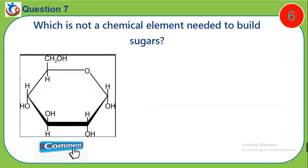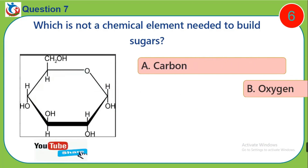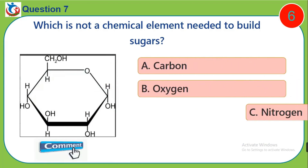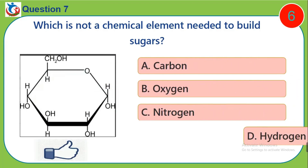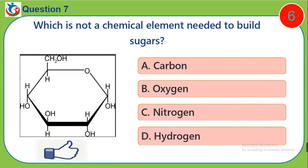Question 7. Which is not a chemical element needed to build sugars? A. Carbon, B. Oxygen, C. Nitrogen, D. Hydrogen.